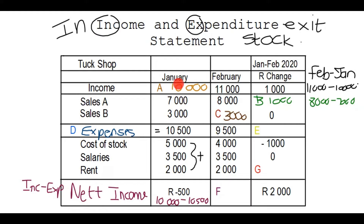Moving to February, we need to determine F. It's your net income: income minus expenses. Our income for February was 11,000 minus 9,500. Type that into your calculator and you will get 1,500 rand for F.